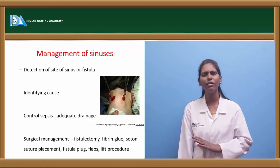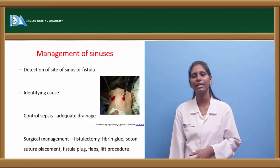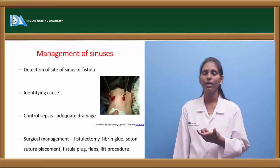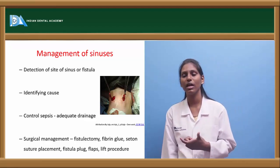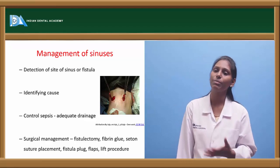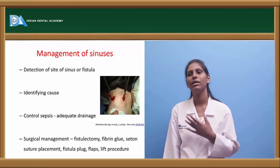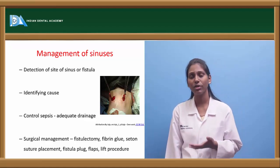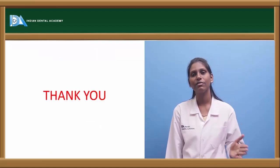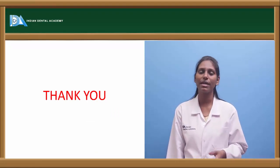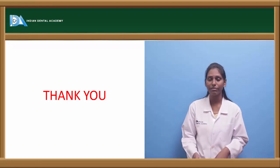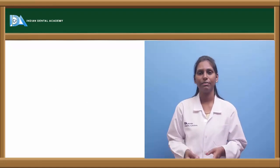Adequate drainage is always useful in managing any sinus opening. In case of a true fistula, it usually does not heal, and fistulectomy is the best option. Other surgical managements include fibrin glue, seton suture placement, fistula plug, and flap procedures. This concludes the overview of various types of sinuses and fistulas, their diagnosis, and treatment.